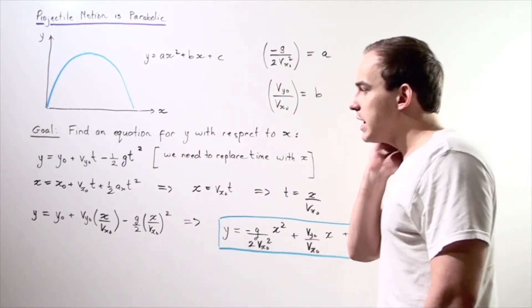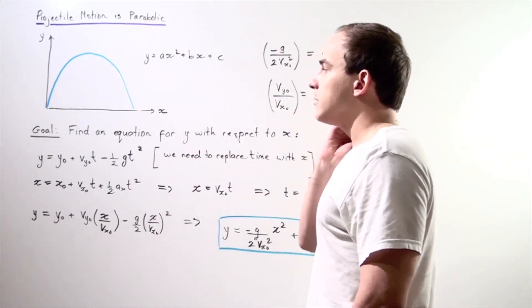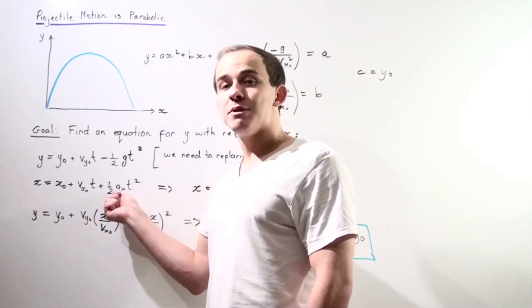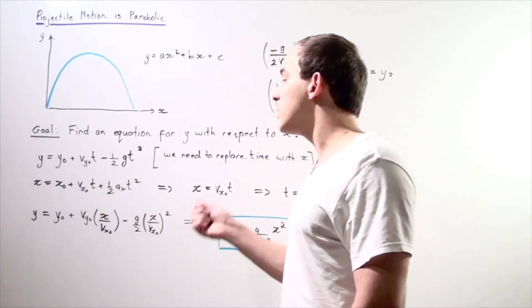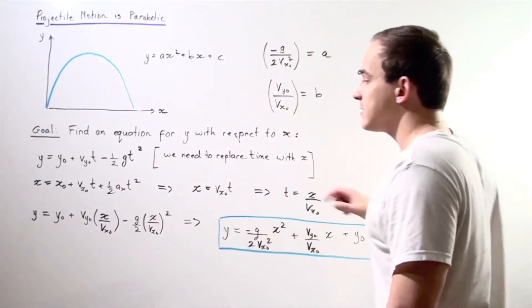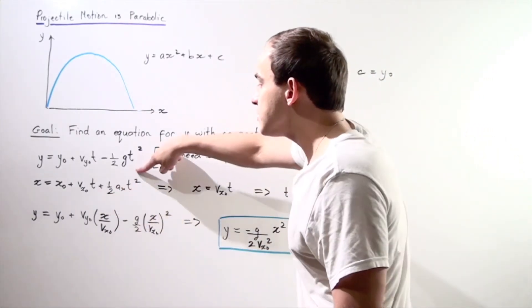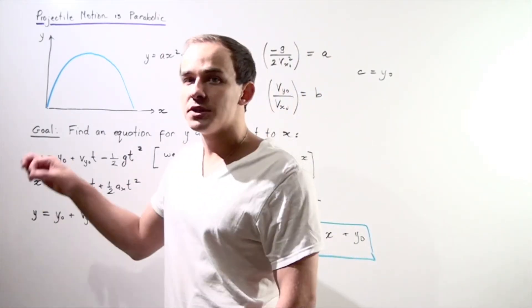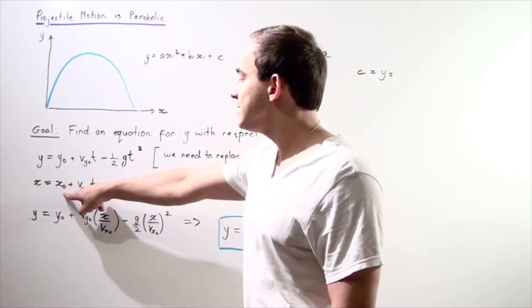Now, we're making the assumption that our object is not undergoing air resistance. So that means this term is zero—we have no acceleration along the x-axis. Let's also make the assumption that our initial position along the x-axis is zero. So we get the following result.